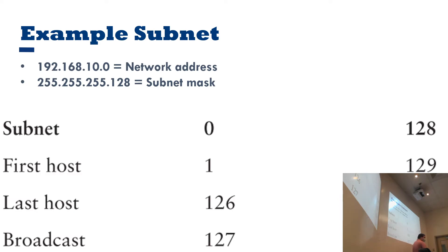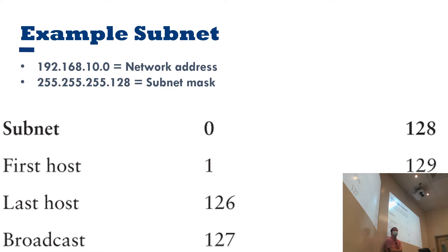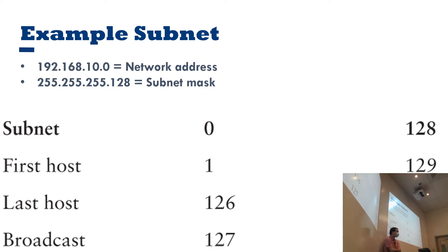Here's an example network address: 192.168.10.0. What type is it? It's class C, exactly right. So with that in mind, we can only really play with the last octet for determining hosts. If the subnet mask is 255.255.255.128, how many subnets are there? Two — you'd have subnet zero and subnet 128.